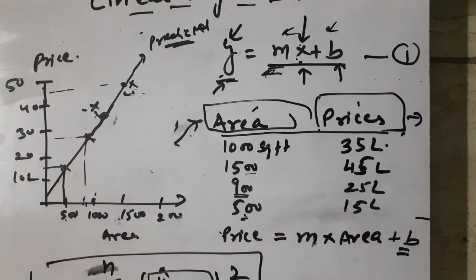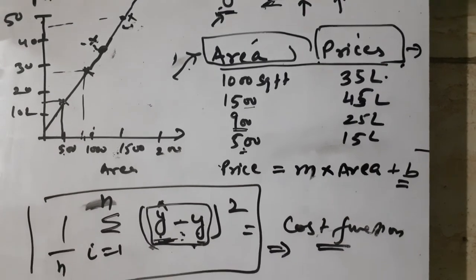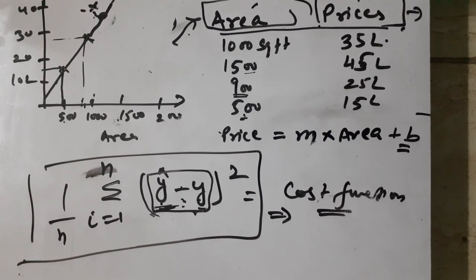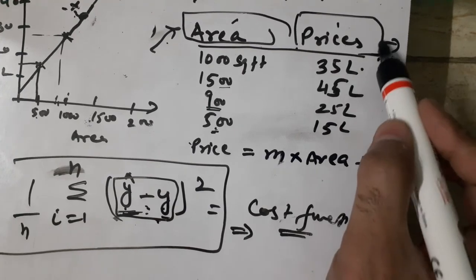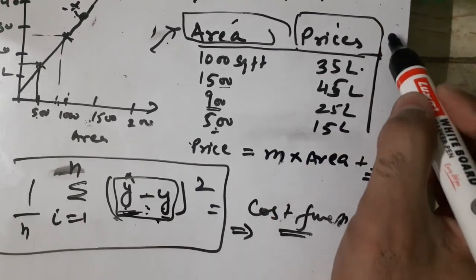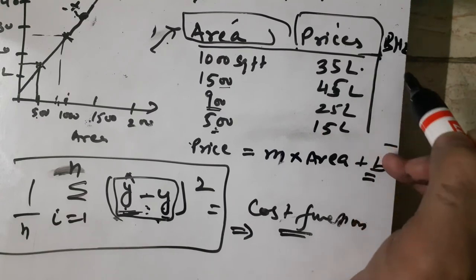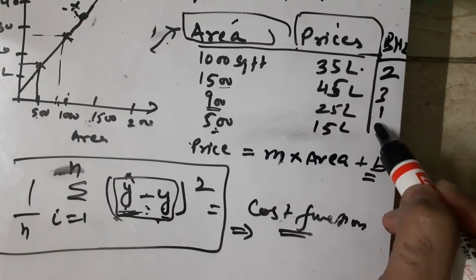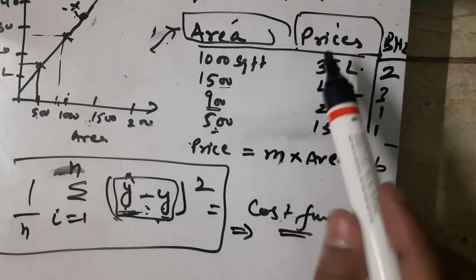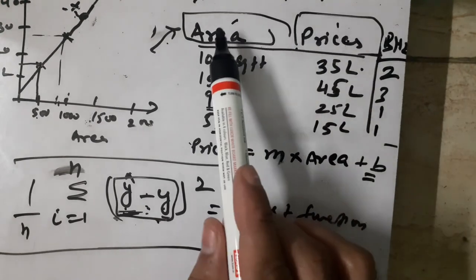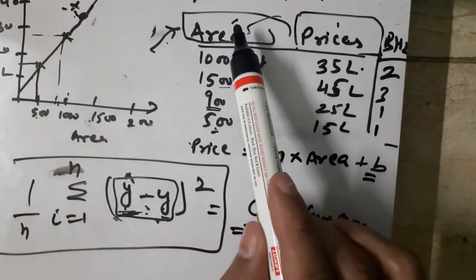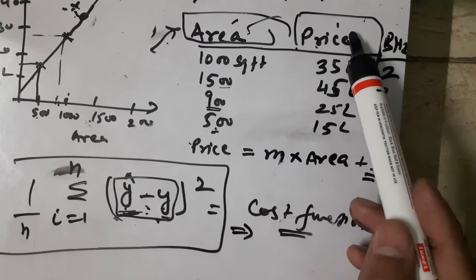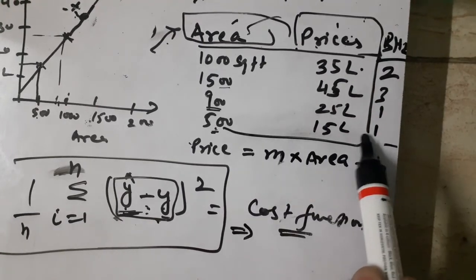In real life we might have multiple independent variables. For instance, if I add another column — how many BHK the flat is, like 2 BHK, 3 BHK, 1 BHK — then we have two independent variables, area and BHK, and one dependent variable, price. This is the value we want to predict.